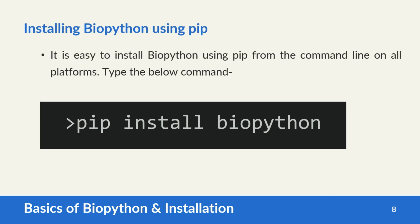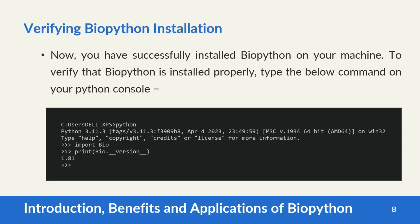So how can you install Biopython? In this video we're going to use a simple method using the pip command. Open your command prompt CMD and type 'pip install biopython' and it will install it. After that, you verify the installation of Biopython, and it will print the version of Biopython which you have installed.